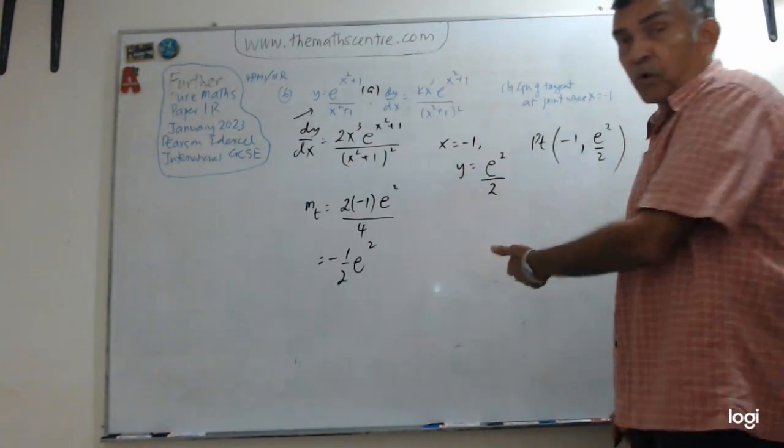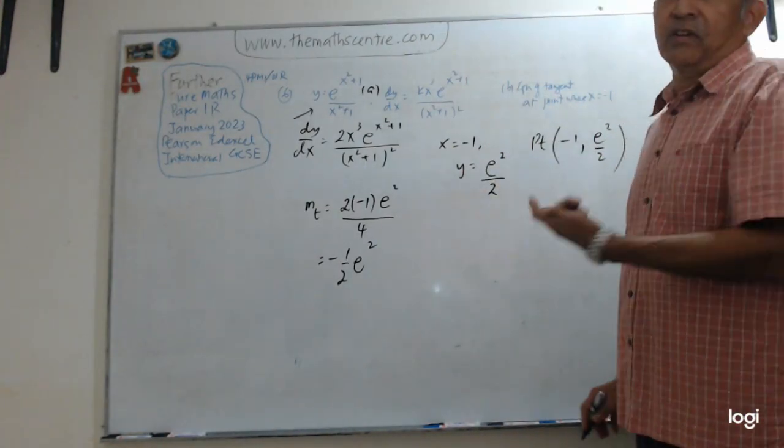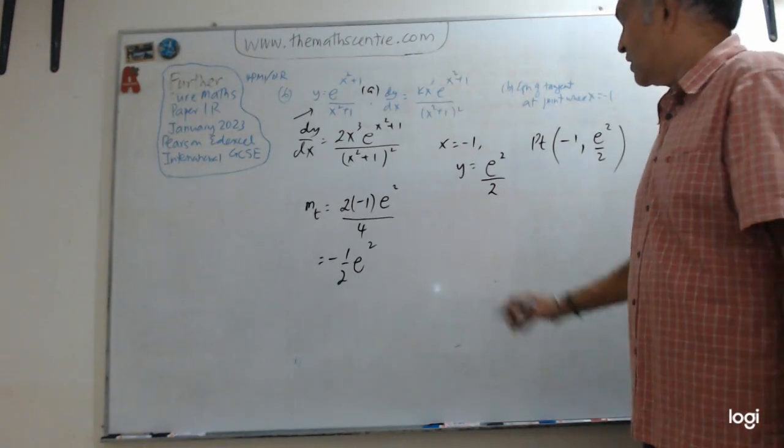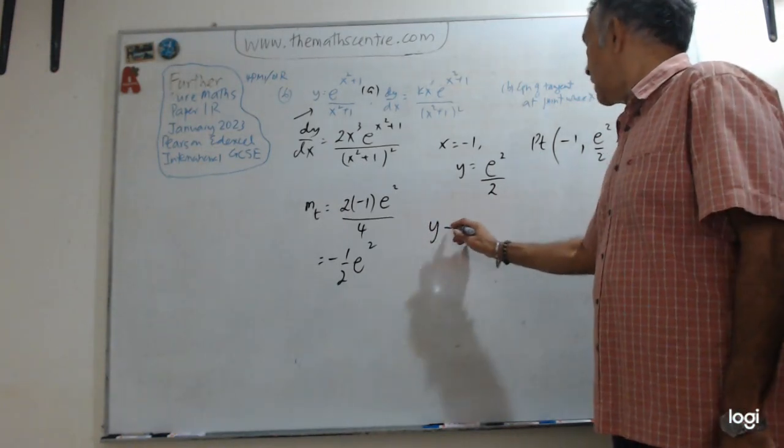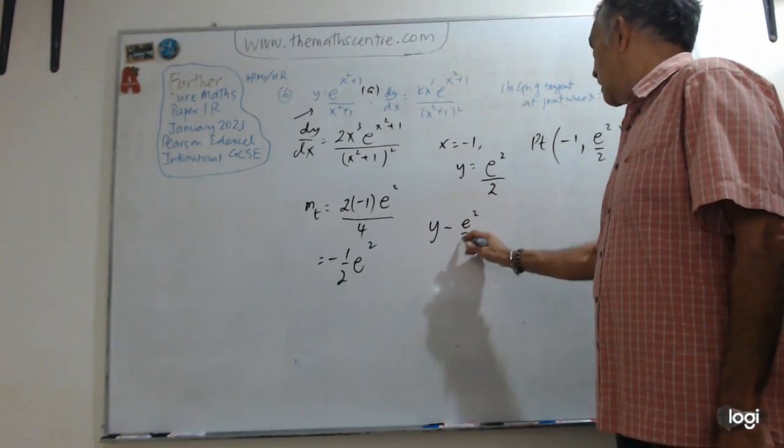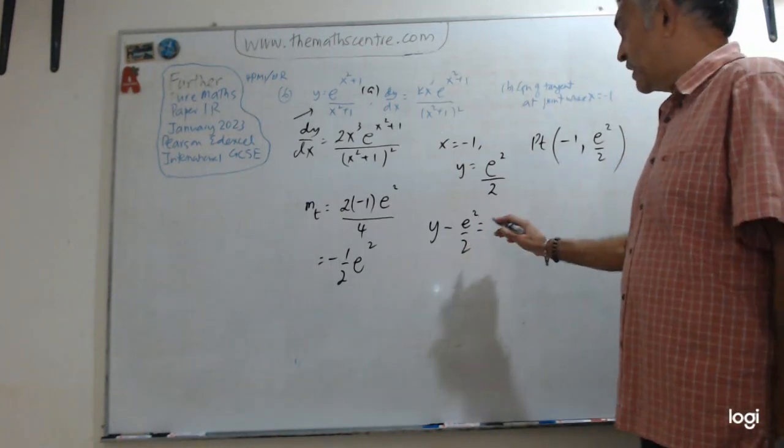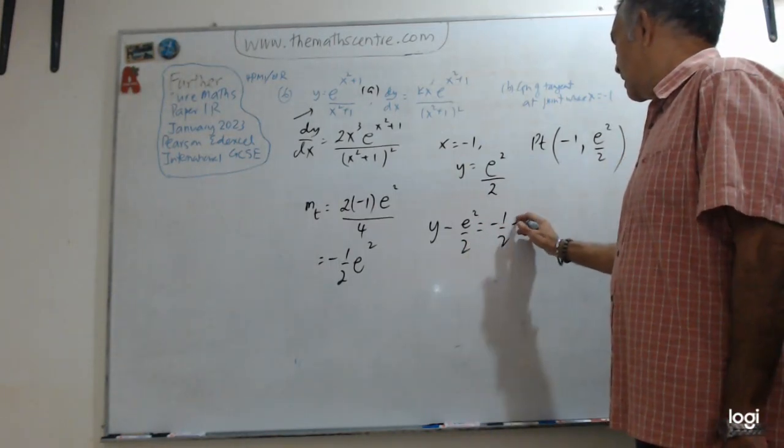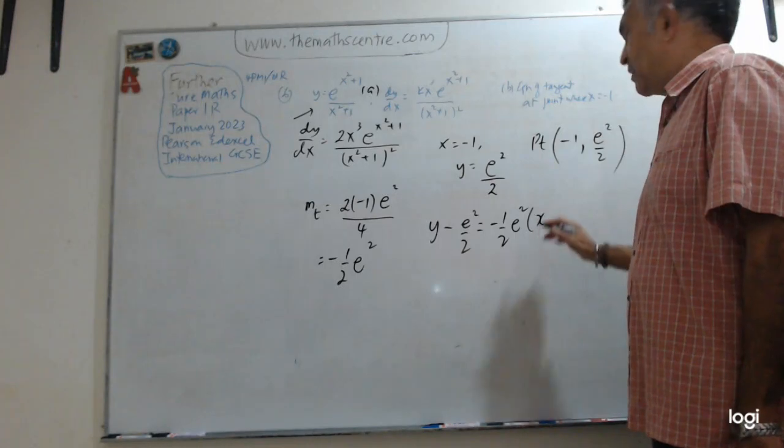So now you have the point and you have the gradient. You can write the equation of the tangent. So let's do that. So let's get y minus y₁ equals gradient times x minus x₁.